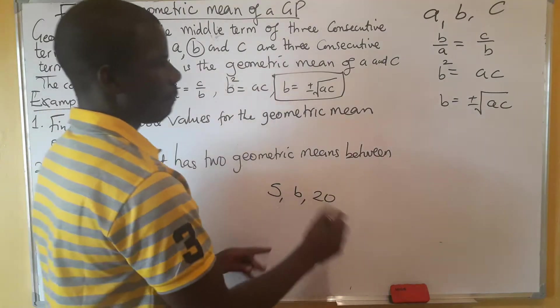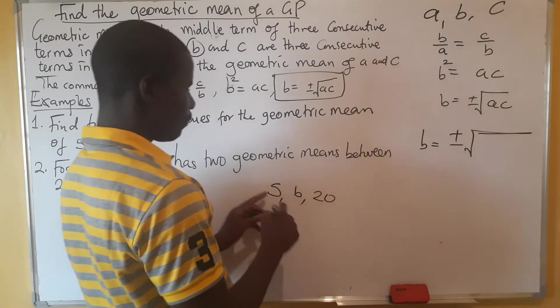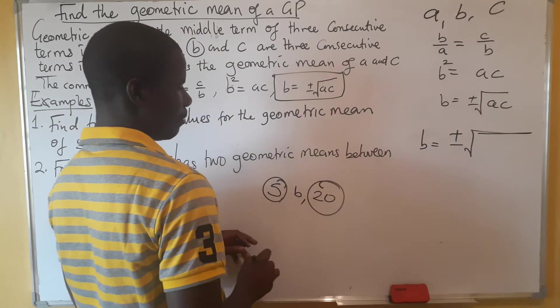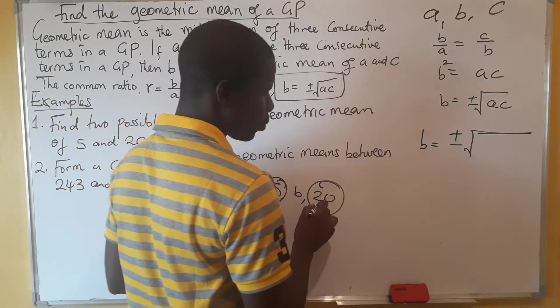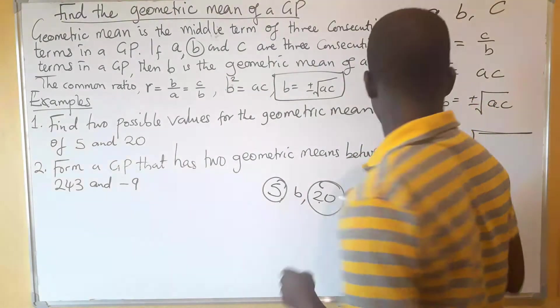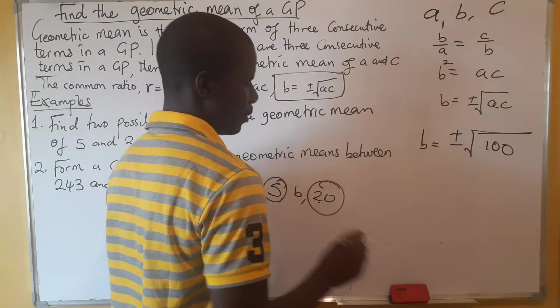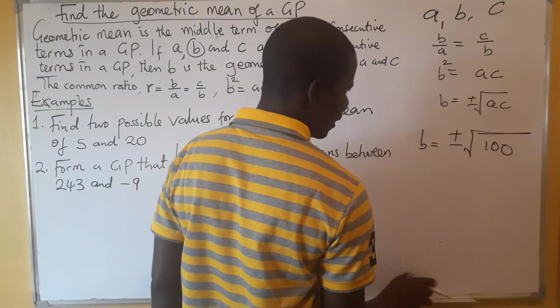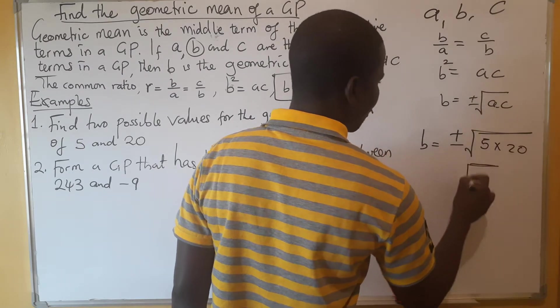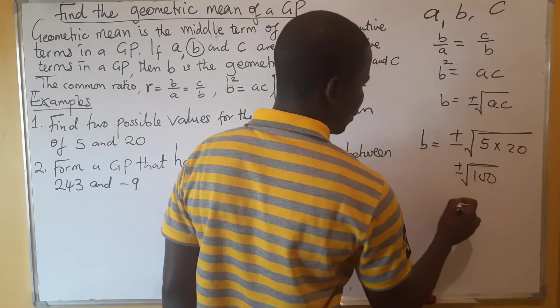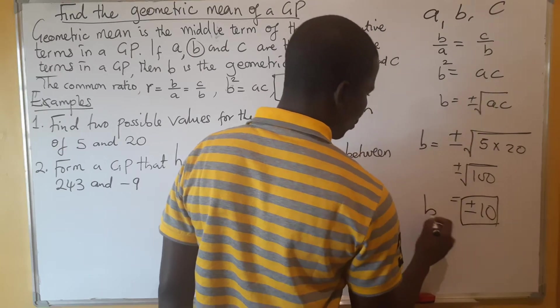We are saying we have got 5, we have got our b which is our geometric mean, and then 20. So what is our b? b equals the positive or negative square root of the product of this one, which is a multiplied by c. So we need to multiply 5 multiplied by 20. What do we get? We get 100. We bring it down here as plus or minus the square root of 100.